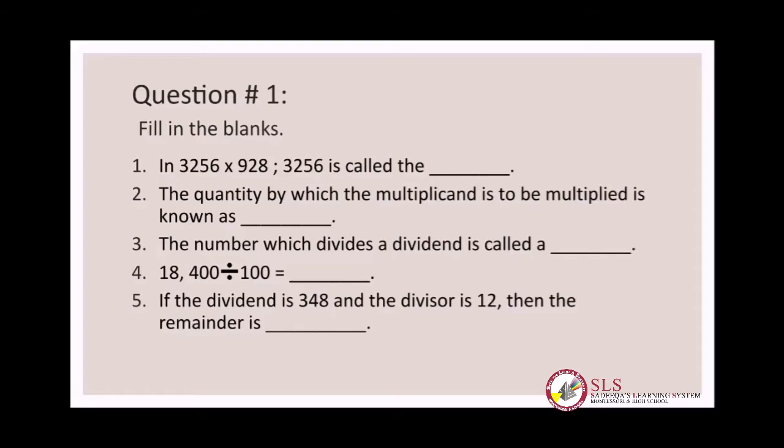The second blank: the quantity by which the multiplicand is to be multiplied is known as dash. In this statement the multiplicand is given, and the number that is going to multiply it — the name of that term is multiplier.